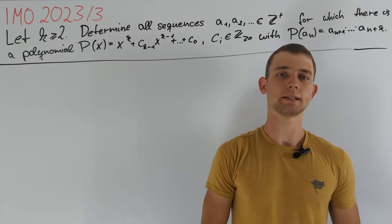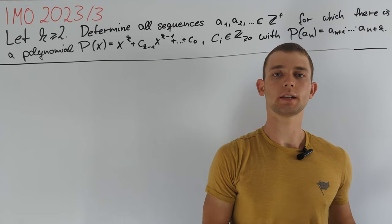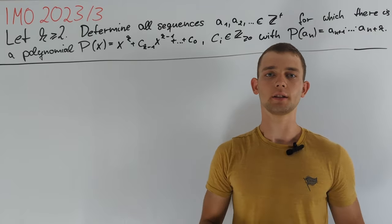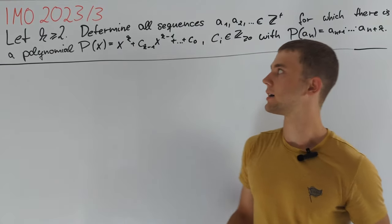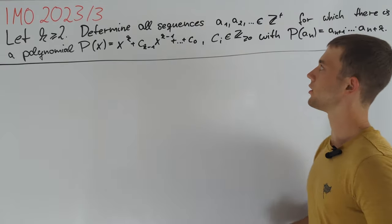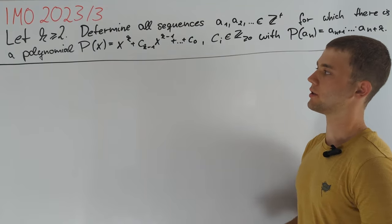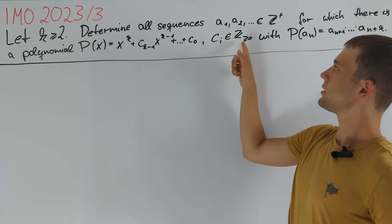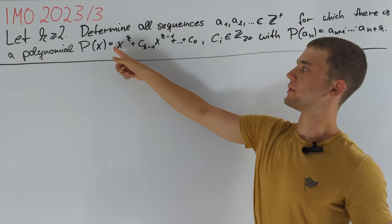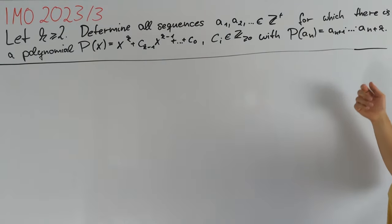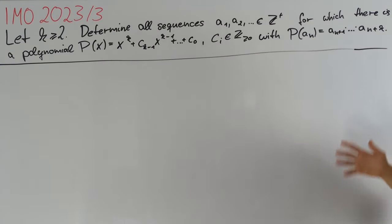Hey guys, in this video I will present the last problem from the first day of IMO 2023, currently taking place in Japan. We consider an integer k greater than or equal to 2. We are asked to determine all sequences of positive integers a1, a2, and so on, for which there exists a polynomial p(x) with non-negative integer coefficients, leading coefficient 1, and degree k, such that for all integers n greater than or equal to 1, p(a_n) equals a_{n+1} times ... times a_{n+k}.